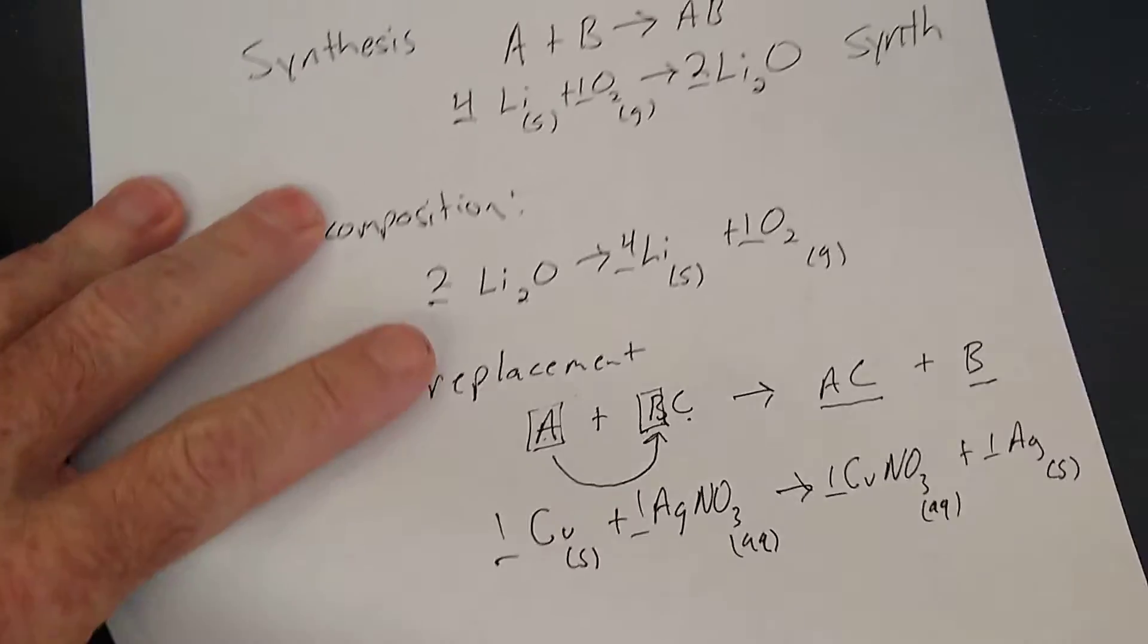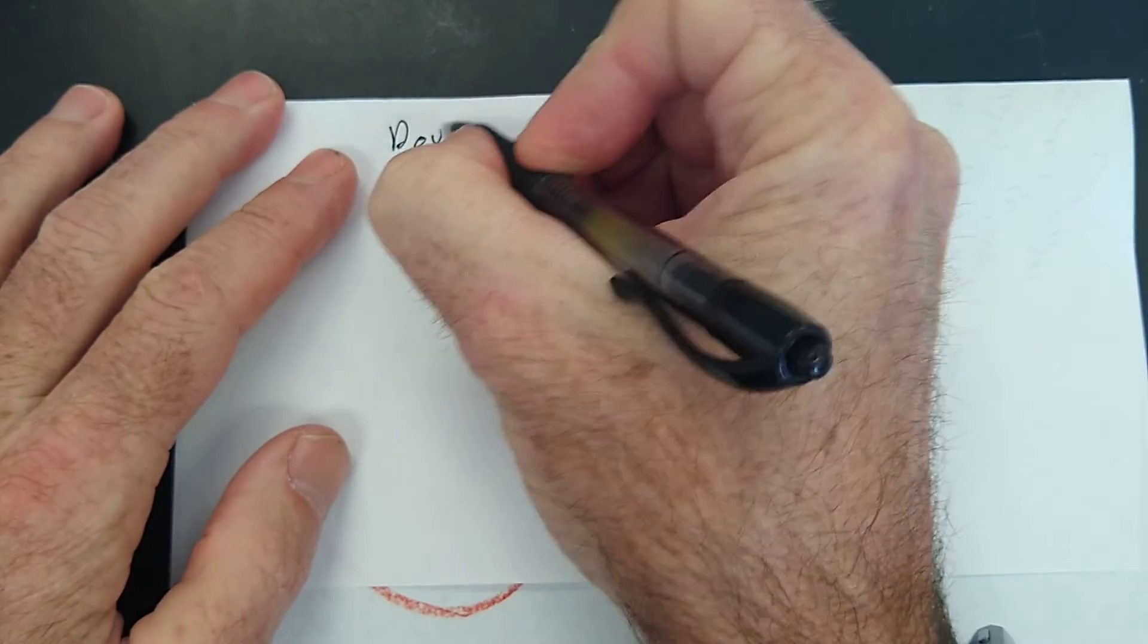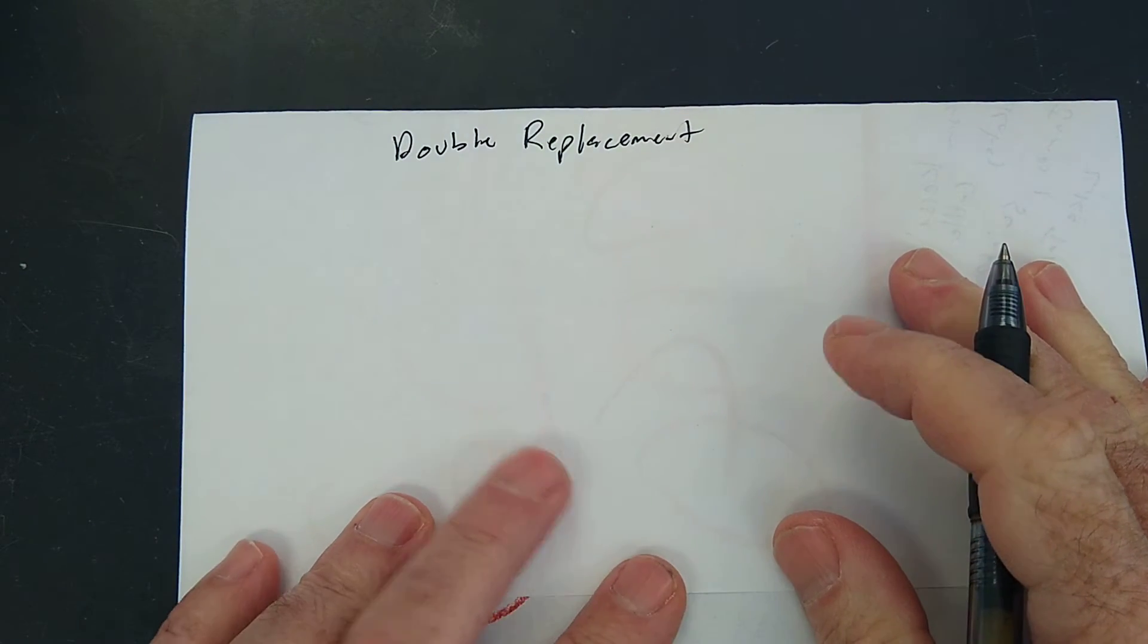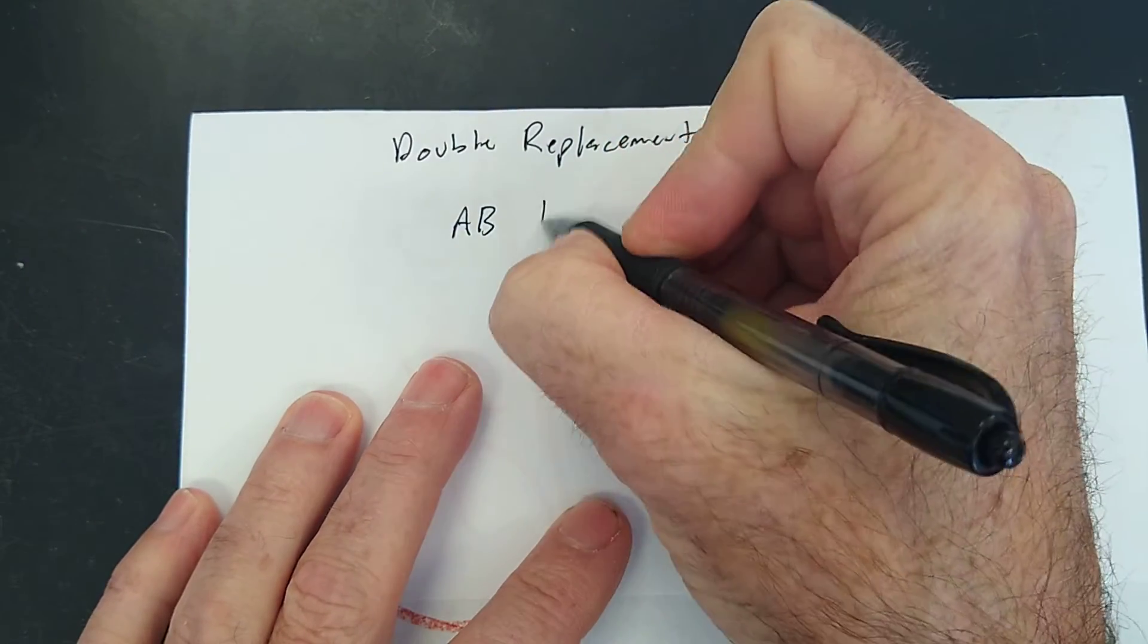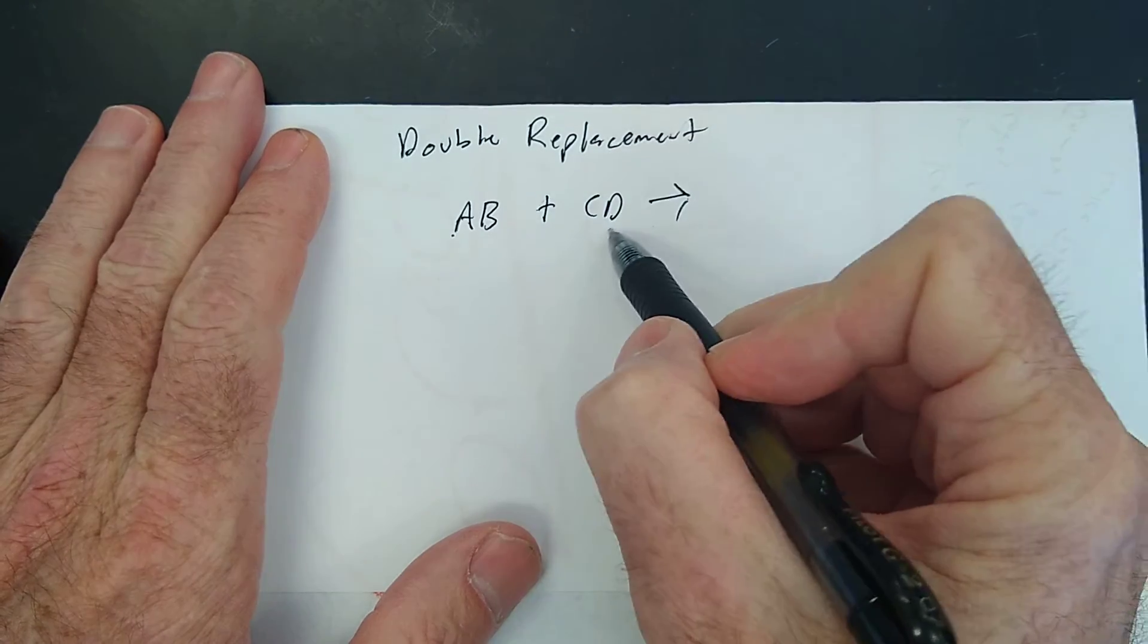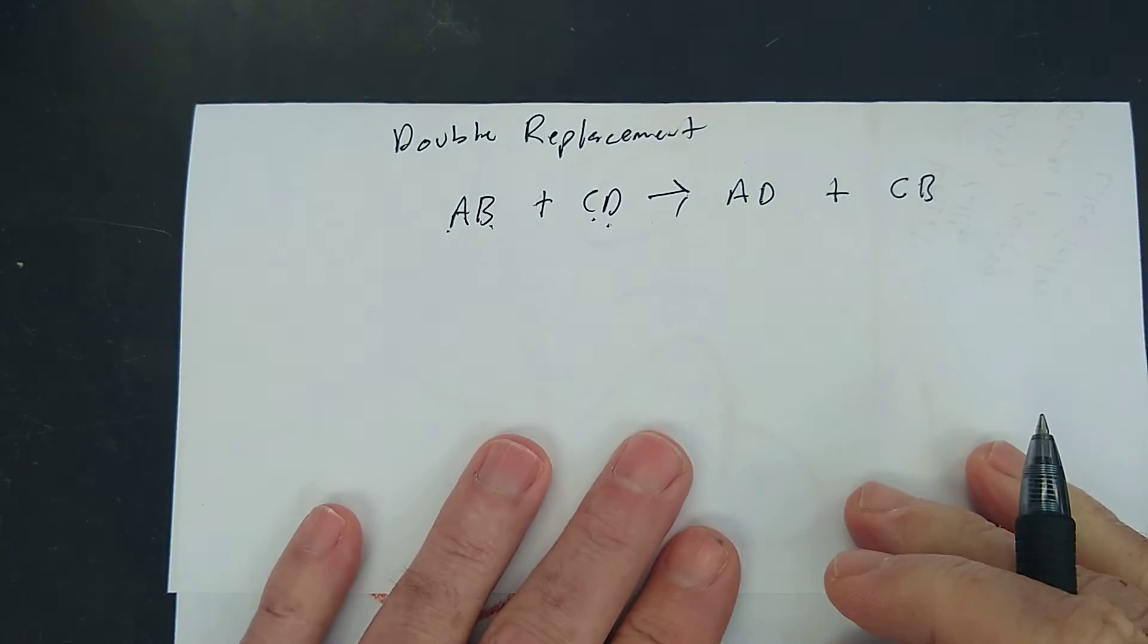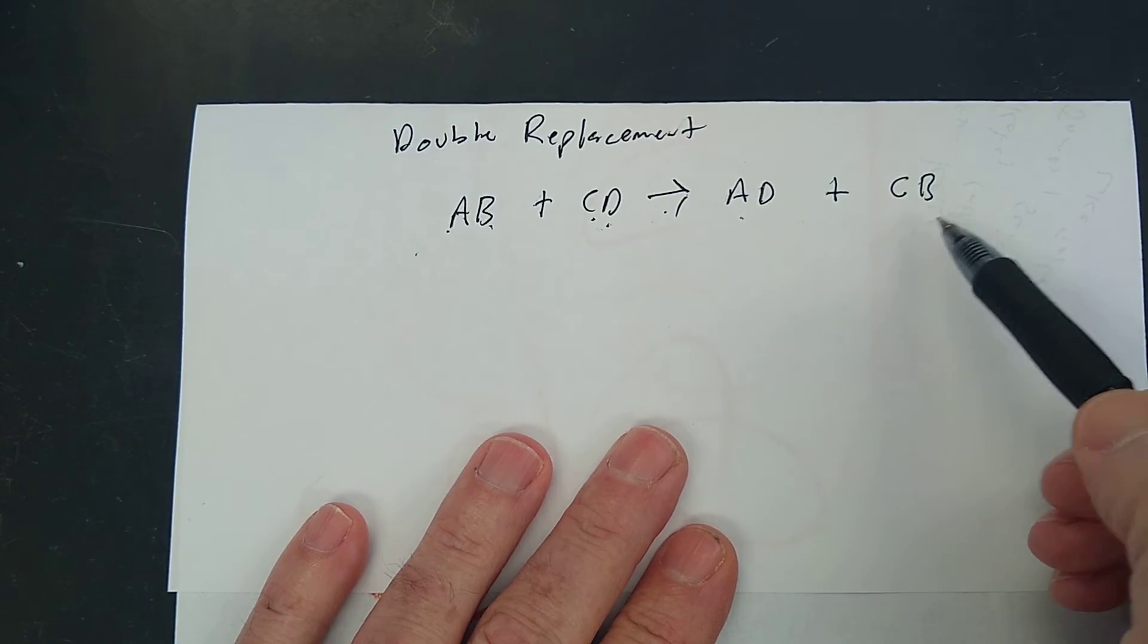Let's try another type. Let's try something called double replacement. These are really fun. These are when we can mix two different liquids in class and make like a solid that looks really cool. A double replacement. Say you have a compound AB and another compound CD and you mix them together and then the A ends up with the D and the C ends up with the B. See, I always keep the first letter first. So now you have these two couples and something happens and now you have two new couples. They paired up.